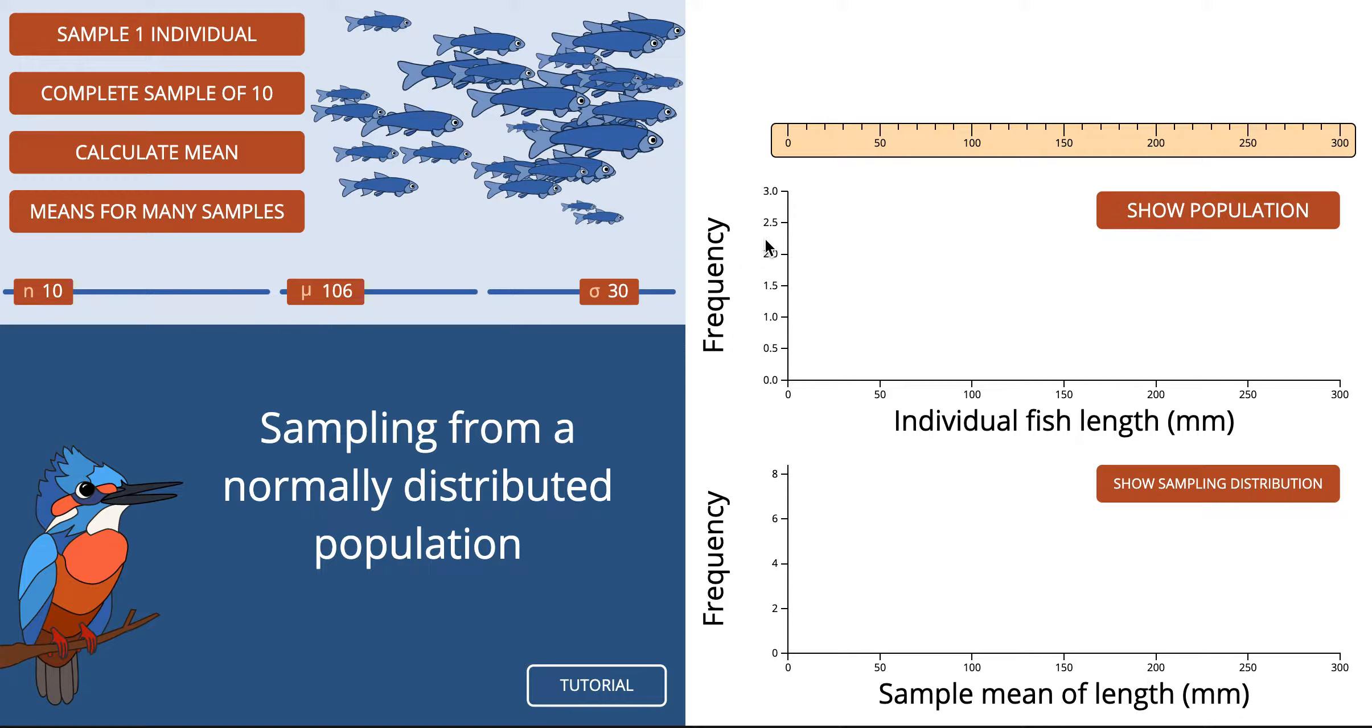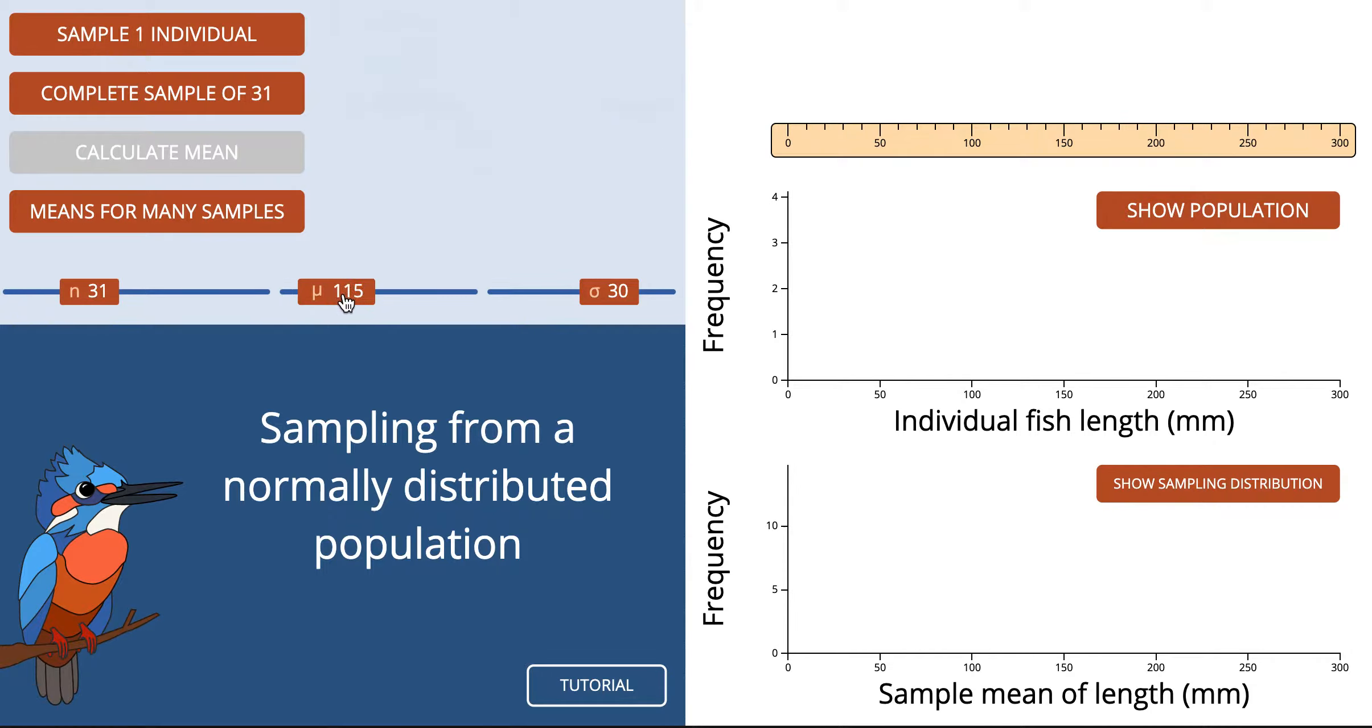This amazing bit of software allows us to take samples of, in this case, fish from a population and just have a look at what's going on when we take a sample. So our previous questions, we've just taken one item, one member of the population and calculated a p-value for that one item. Here, it makes sense to actually take a sample size of more than one. So we're going to change this now up to a sample size of 30.